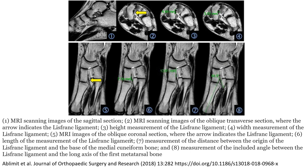MRI scanning images are shown in multiple planes. The axial section has an arrow indicating the Lisfranc ligament, with measurements of its height and length. The oblique coronal section also has an arrow indicating the Lisfranc ligament, with measurements including the distance between the origin of the Lisfranc ligament and the face of the medial cuneiform bone, and the included angle between the Lisfranc ligament and the long axis of the first metatarsal.